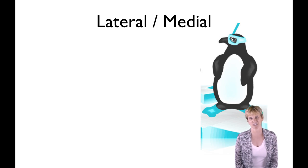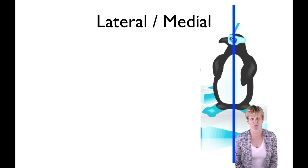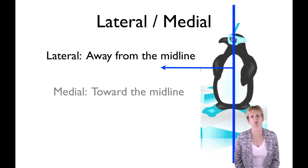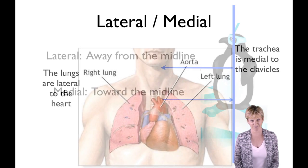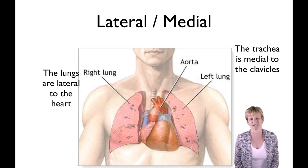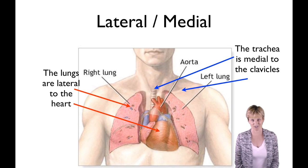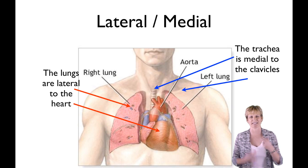Lateral and medial — you'll notice a lot of these words occur in pairs. If you draw a line midway down the body, what we call the midline, when you move away from the midline we call that lateral — you're moving out to the side. When you move toward the midline we call that medial. For example, the lungs are lateral to the heart. The trachea — your windpipe — is medial to both clavicles; it's right on that midline, medial to the collarbone.